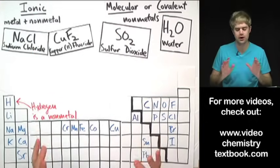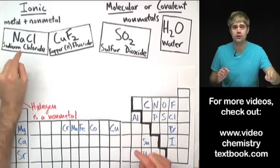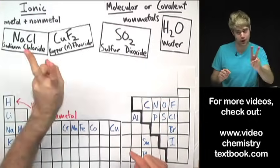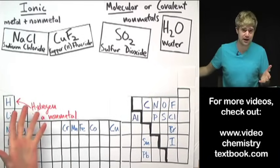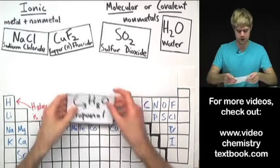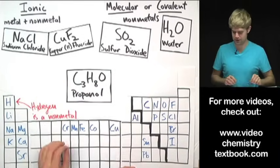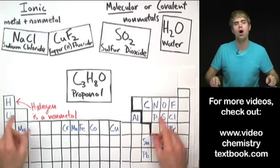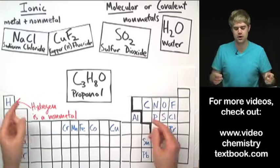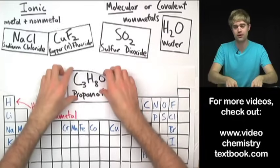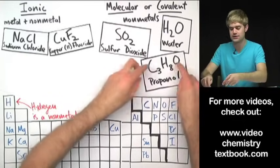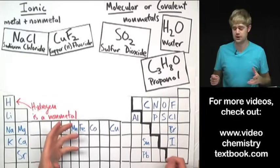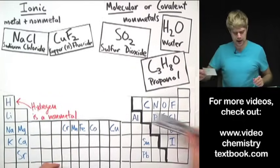Let's look at a few trickier examples. So far, we've only looked at compounds that have two elements in them, but there are a lot of compounds out there that have more than two elements in them. Propanol, for example, is made of carbon, hydrogen, and oxygen. All three of these are non-metals though, so this is still a molecular or covalent compound even though it has a bunch of non-metals in them. Don't be confused by that.